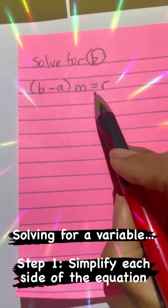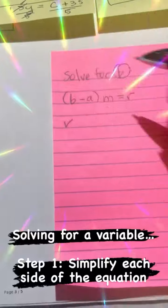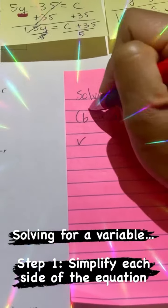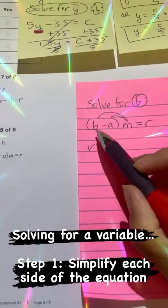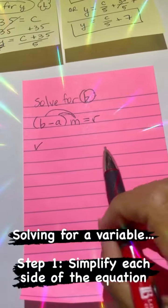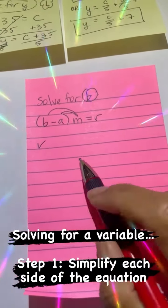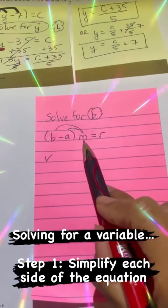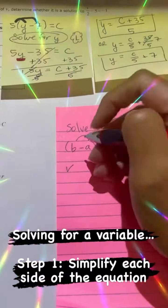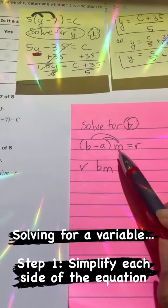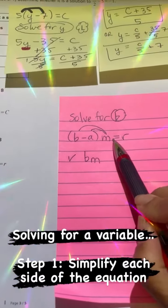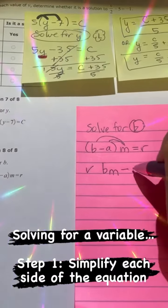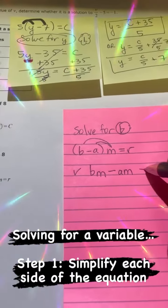So, first thing you do is you're going to get rid of the parentheses. You're going to distribute the M through. Again, because they're letters, it might seem scary, but don't let it scare you. It's actually easier than numbers. Because what's B times M? BM. So you don't have to think of numbers. What's negative A times M? Negative AM, is equal to R.